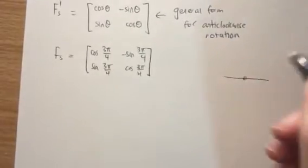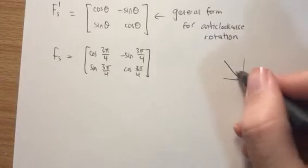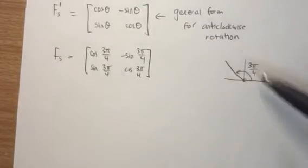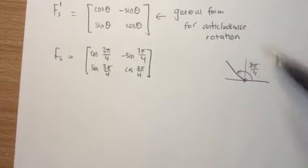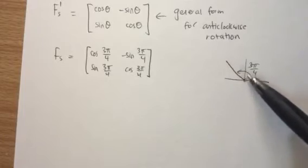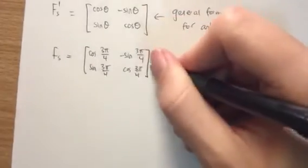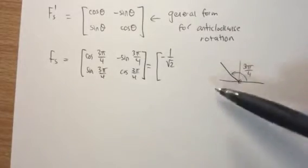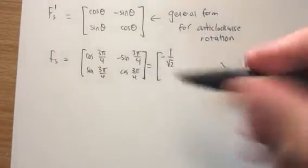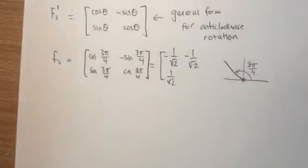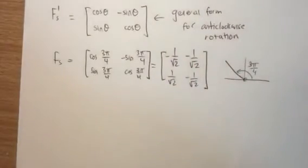Considering the unit circle, 3π/4 is in the second quadrant. For cosine, we think of the x-direction — it's clearly negative, and since the angle has a denominator of 4, we think 1/√2. So cos(3π/4) = −1/√2. For −sin(3π/4): sine is positive in that direction, but there's a negative out front, so it's also −1/√2. Then sin(3π/4) = 1/√2 (positive y-direction), and cos(3π/4) = −1/√2. So there's our standard matrix F_s.